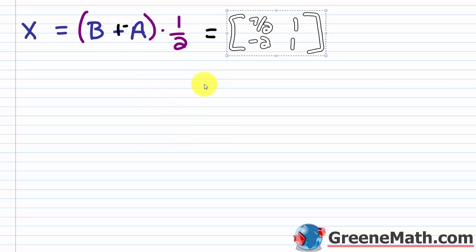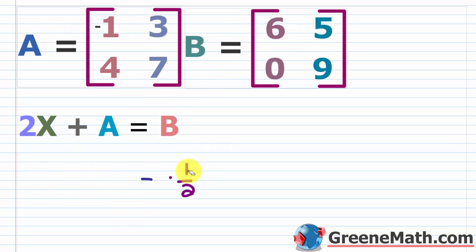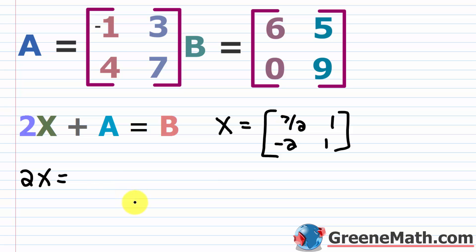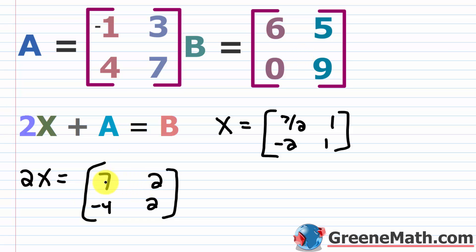So matrix X has top row of seven halves and one, and bottom row of negative two and one. To verify: two times X gives rows [7, 2] and [−4, 2]. Adding matrix A: seven plus negative one is six, two plus three is five, negative four plus four is zero, and two plus seven is nine — which equals matrix B. So our solution for X is correct.